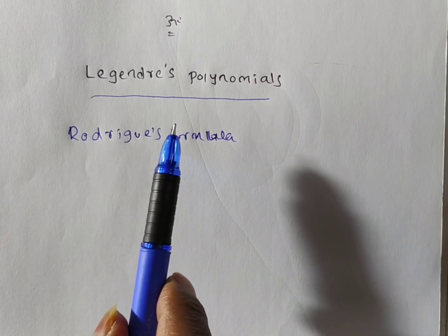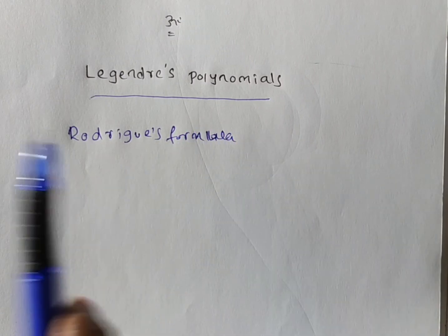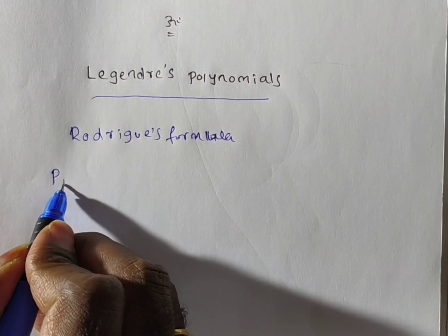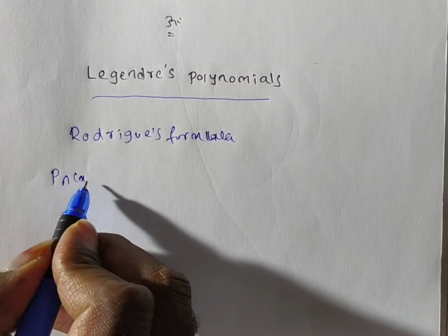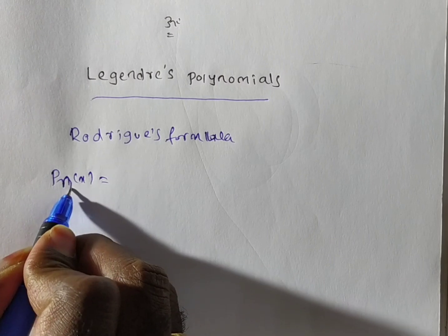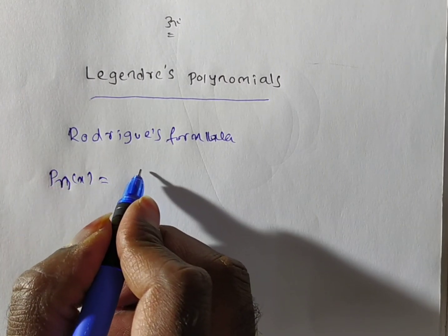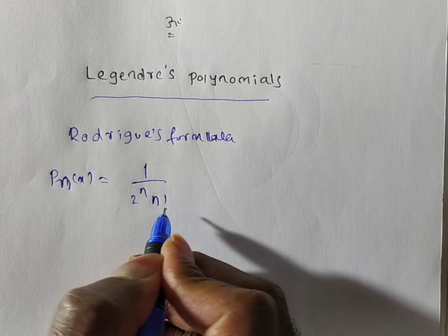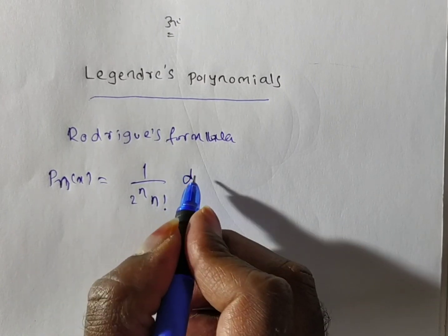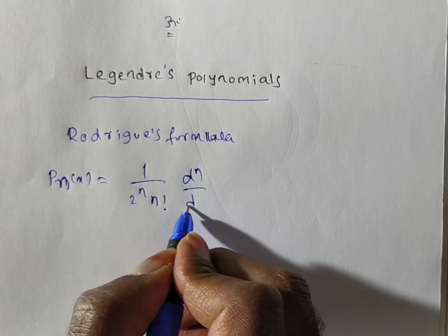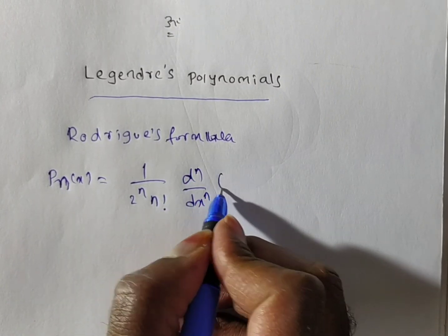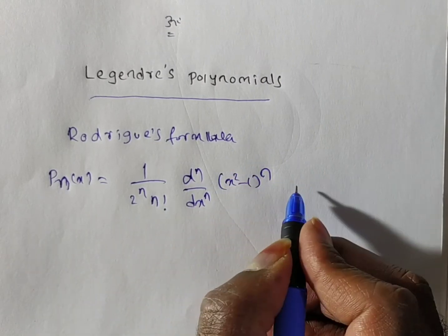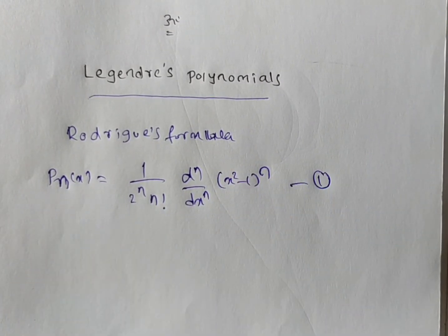These Legendre polynomials we will get from the Rodrigues' formula. Rodrigues' formula: Pn of x is equal to 1 by 2 to the power of n, into n factorial, into d to the power of n by dx to the power of n, times of x squared minus 1, whole to the power of n. So this is the Rodrigues' formula.